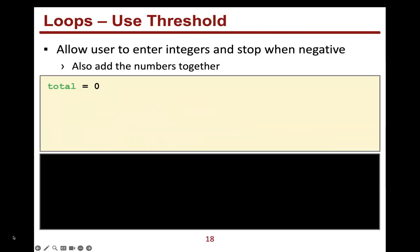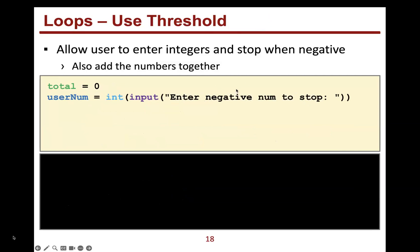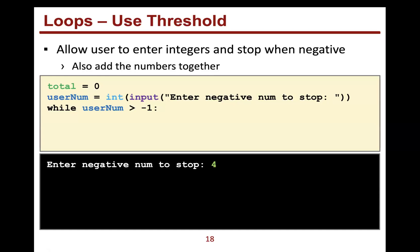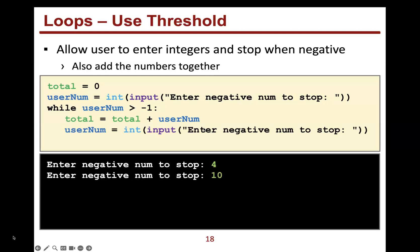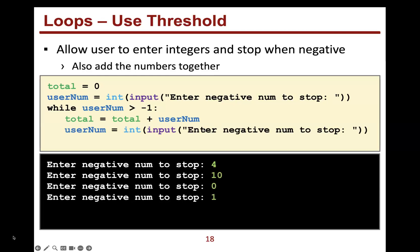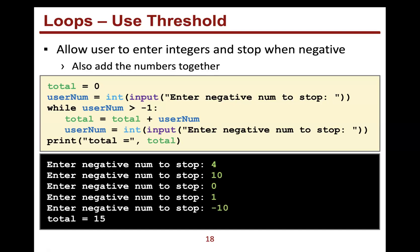Here's a threshold example: instead of stopping at exactly negative one, we stop at any negative number. The while condition is: while user_num is greater than negative one — so we keep looping as long as the input is non-negative (zero, one, two, and up). We add it to total and get input again. When they enter a negative number like negative 10, we exit, and the total printed is 15 — negative 10 is not included.